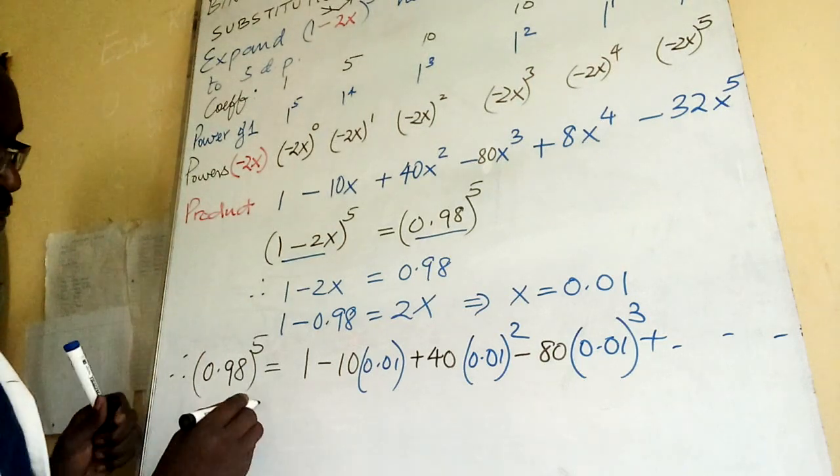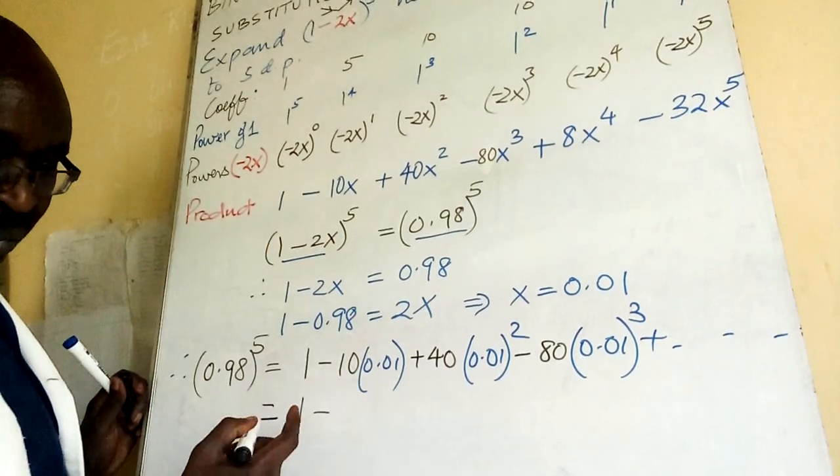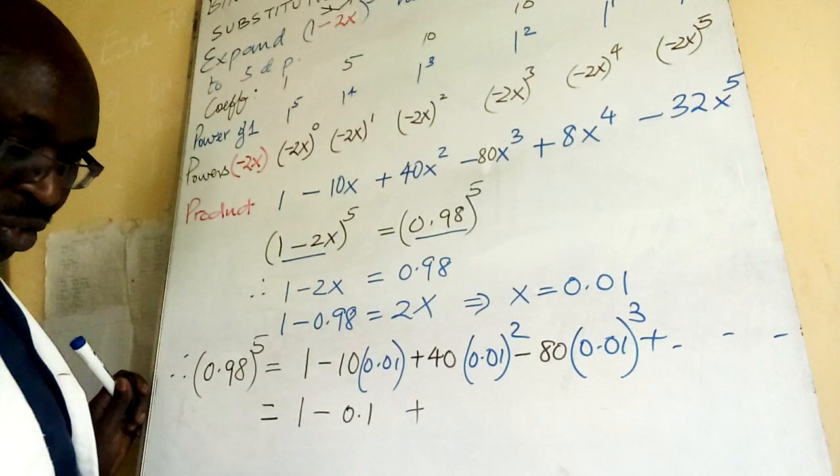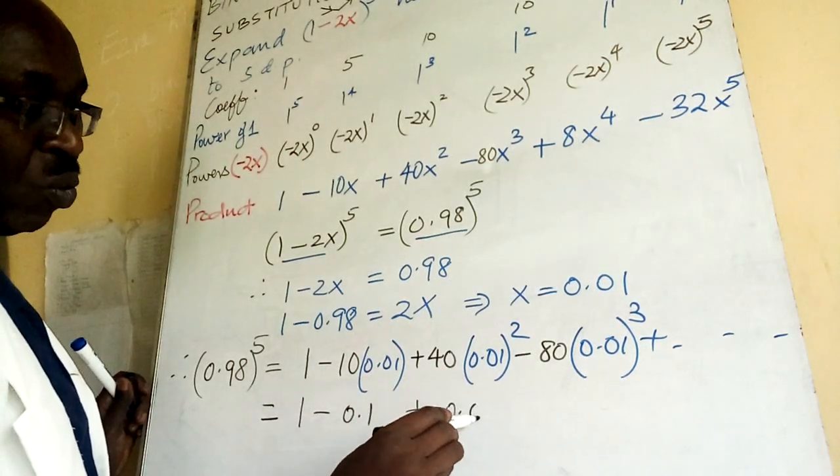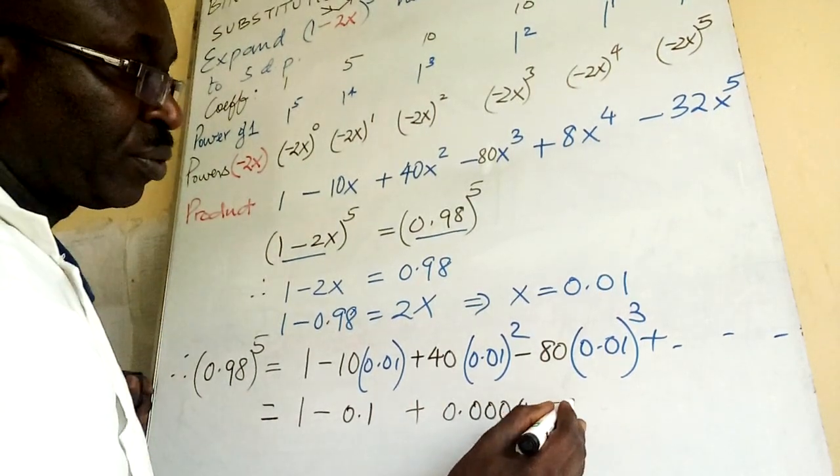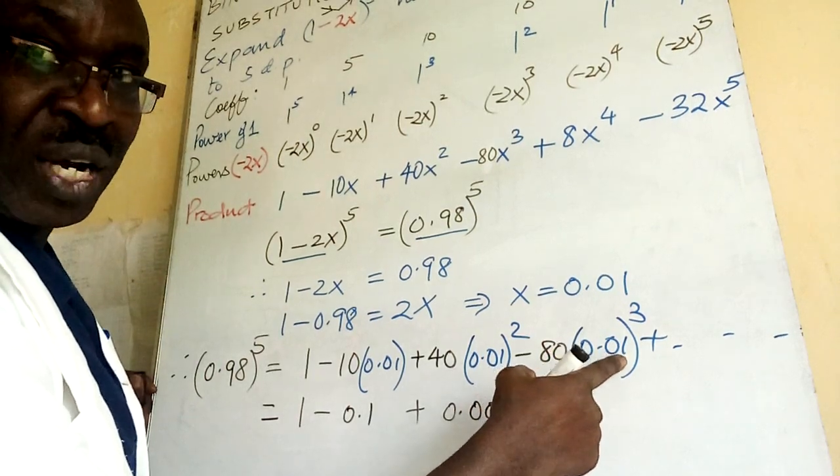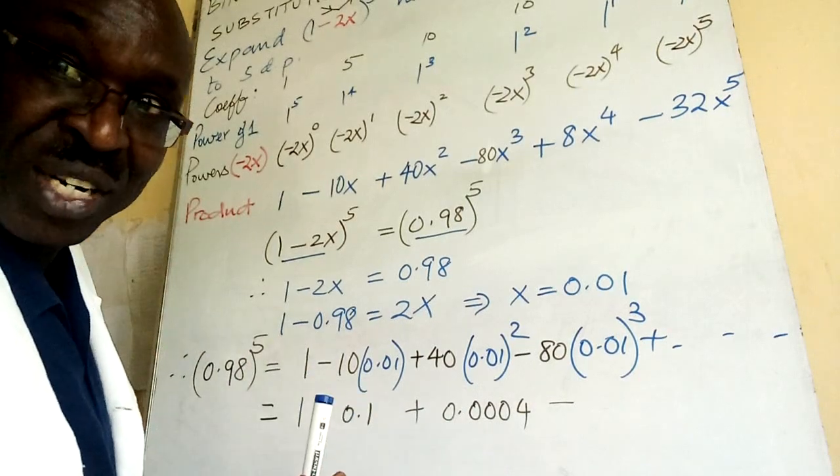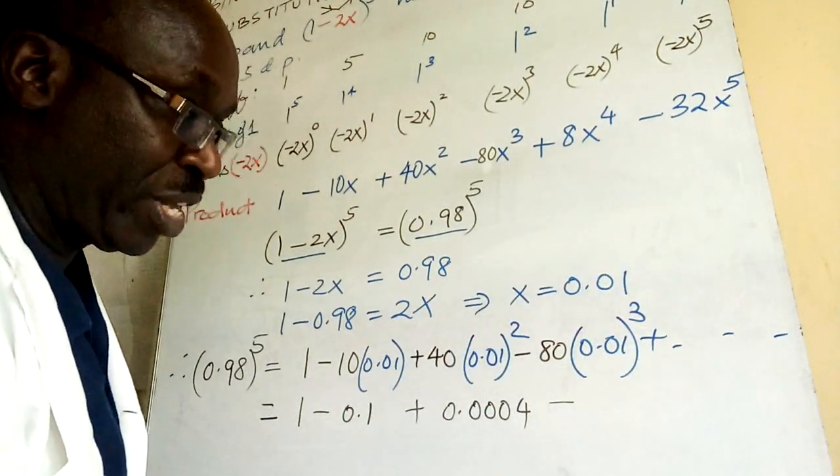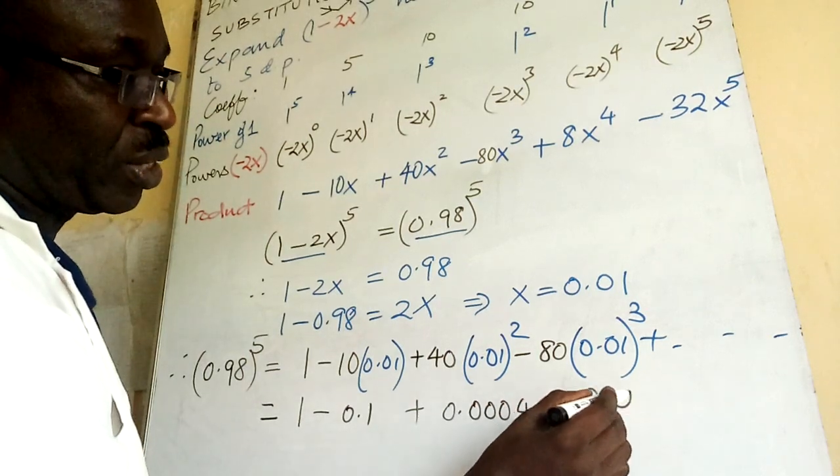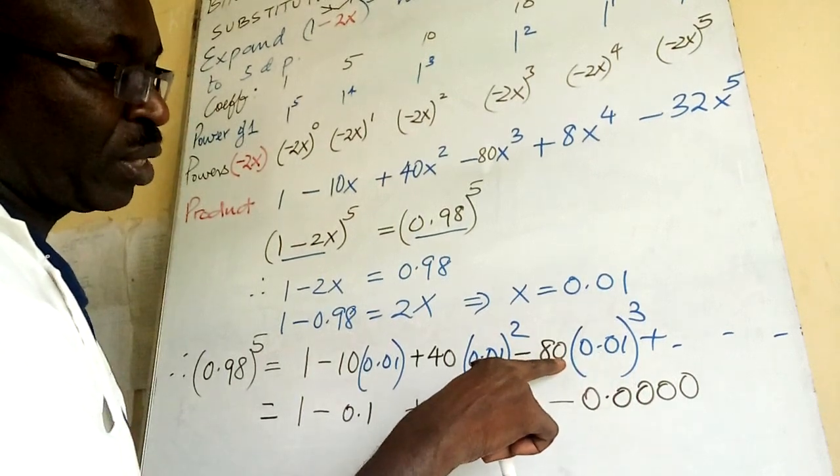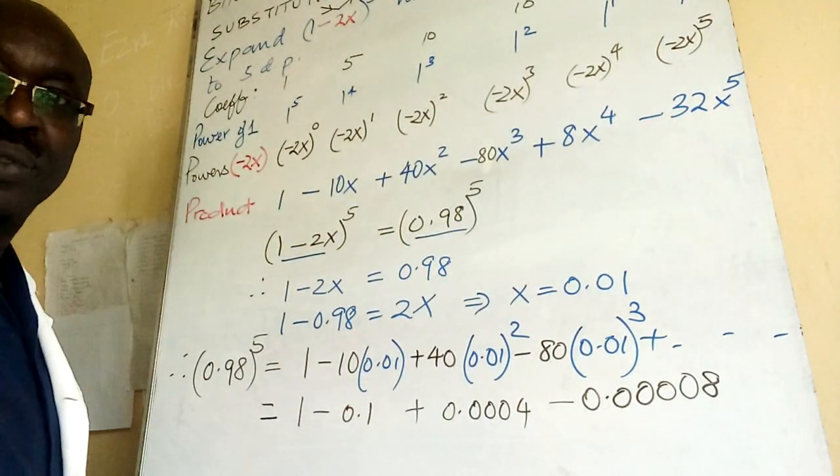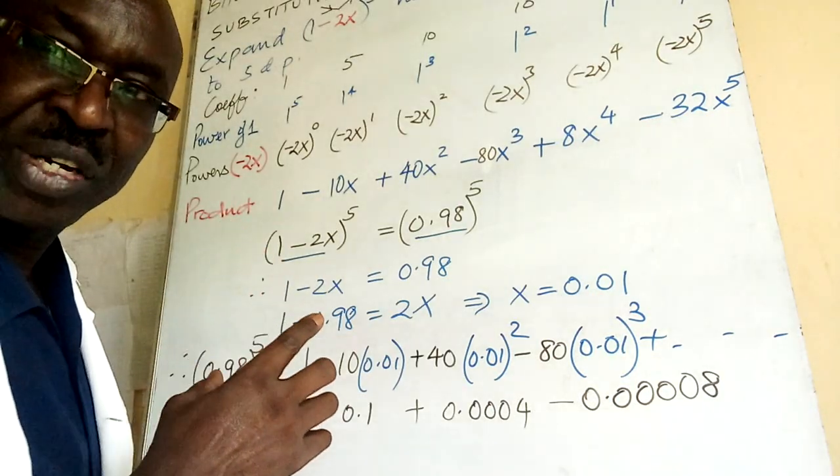Which means I put is equal to 1 minus this becomes 0.1, this one, this is already 4 decimal places, so multiply by 40: 0.0040. Then this is 6 decimal places: 0.1 times 0.1 times 0.1. So since it is 5 decimal places, 6 decimal places are safe for me.